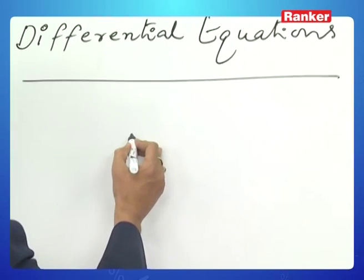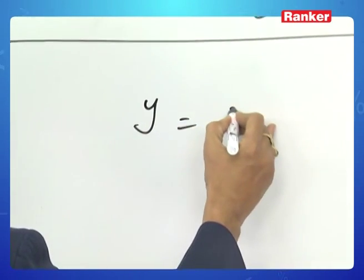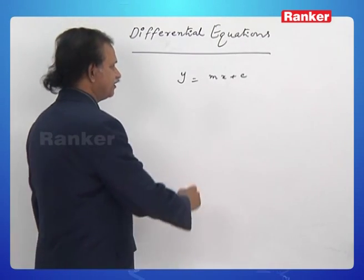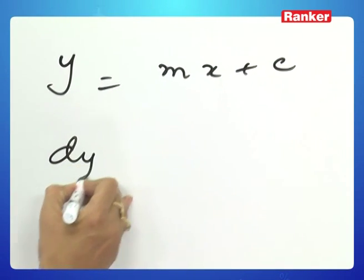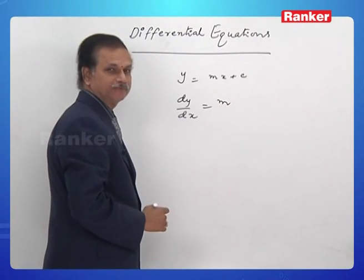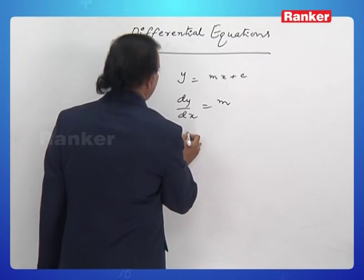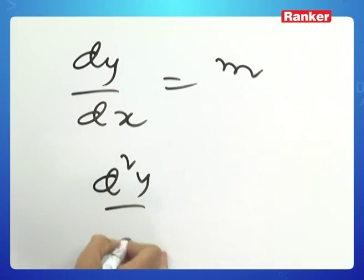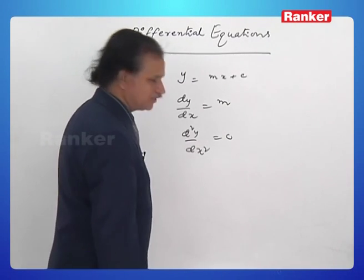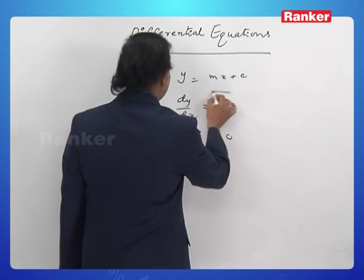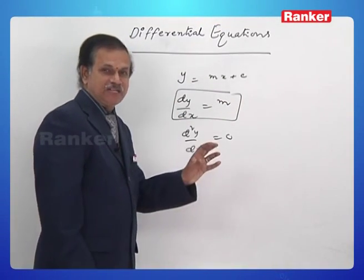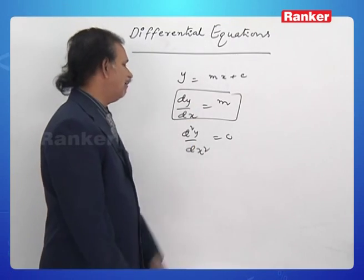Consider the function y is equal to mx plus c. Differentiate it on both sides: dy by dx is equal to m. So, d square y by dx square is equal to 0. In this equation, the differential coefficient dy by dx is involved.